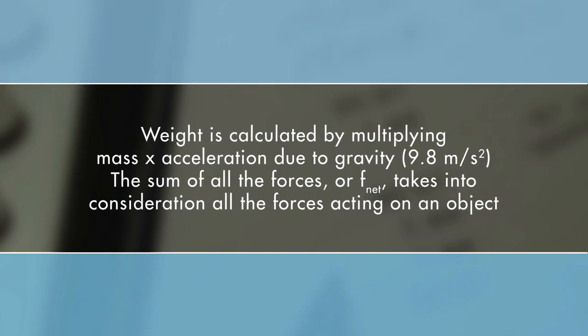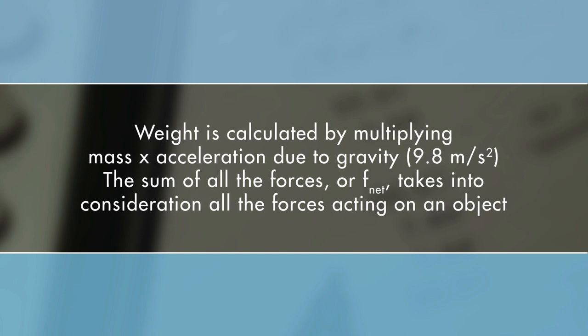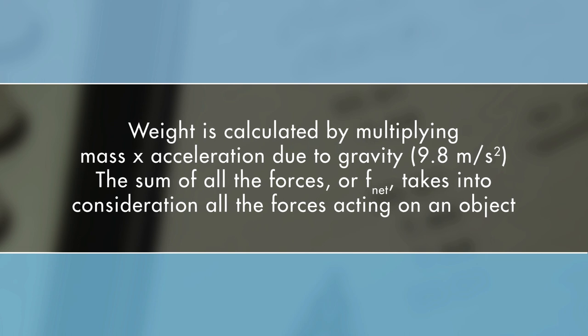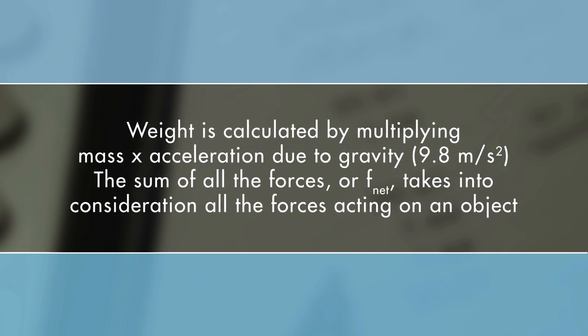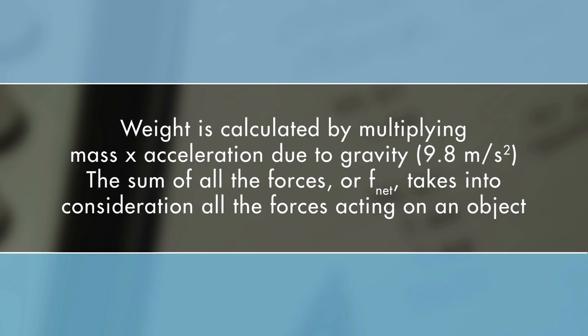Weight is calculated by multiplying mass times acceleration due to gravity, or 9.8 meters per second squared. The sum of all forces, or net force, takes into consideration all of the forces acting on an object. Since the air track provides a nearly frictionless surface for the gliders and all other forces in the system are cancelled out, the net force will be equal to the weight of the bucket.